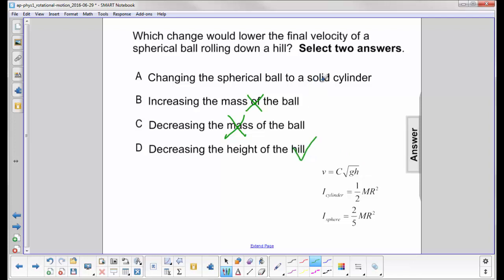If we change the sphere to a cylinder, the cylinder has a higher moment of inertia, so more energy will be put into rotational kinetic energy to get it to move. That means there is less energy available for translational kinetic energy, so it will move slower.